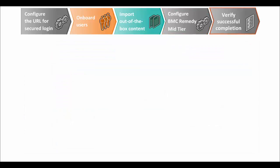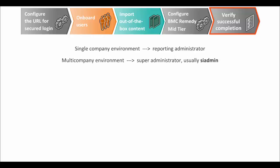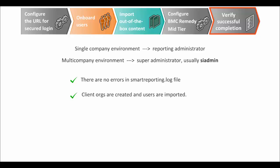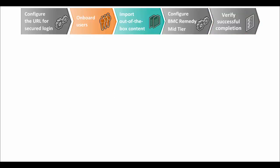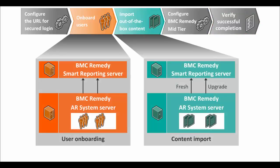Finally, you must verify that the entire process has completed successfully. In a single company environment, login as the reporting administrator. In a multi-company environment, login as the super administrator, usually SI admin. Open the smartreporting.log file and check for errors. Navigate to BMC Remedy Smart Reporting. From the administration section, verify that client orgs are created for all the companies and that all users are onboarded. Also, verify that all out-of-the-box reporting content is available.